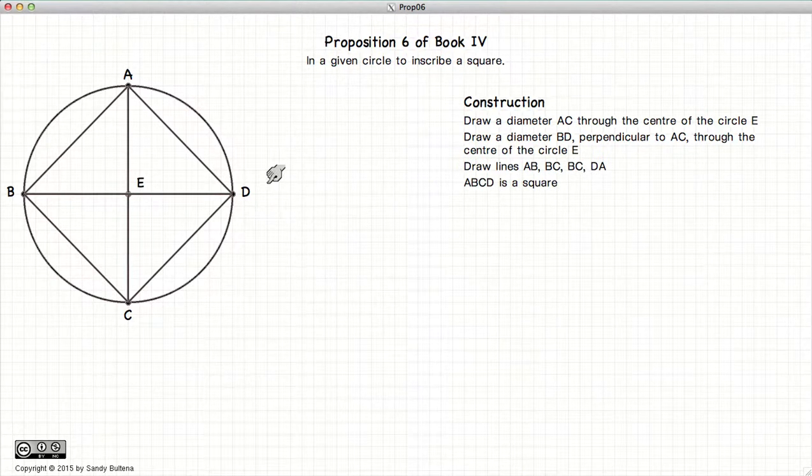We draw the lines from A to DCB, or ABCD. And this is a square. ABCD is a square.